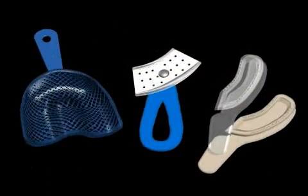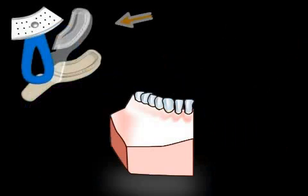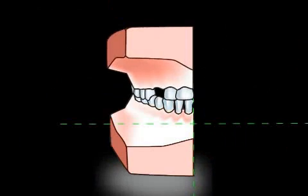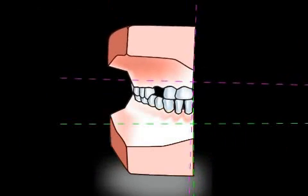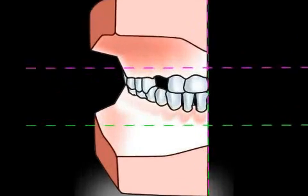Furthermore, impressions should always be taken with full trays, as seen on the left of the image. As a rule, partial trays, as seen on the right, are not exact because the position of the plaster models cannot be precisely aligned with one another. With a partial tray, the dental technician obtains partial models that can be swiveled, and thus can't be positioned accurately.